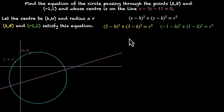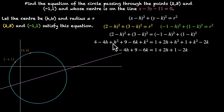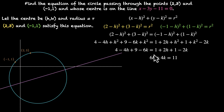Equating the left-hand sides: 2 minus h squared plus 3 minus k squared equals minus 1 minus h squared plus 1 minus k squared. Opening the squares: 4 minus 4h plus h squared plus 9 minus 6k plus k squared equals 1 plus 2h plus h squared plus 1 plus k squared minus 2k. Cancelling h squared plus k squared from both sides gives 4 minus 4h plus 9 minus 6k equals 1 plus 2h plus 1 minus 2k. Combining like terms, the equation becomes 6h plus 4k equals 11.